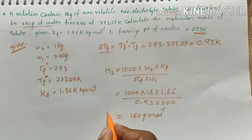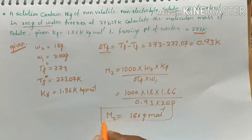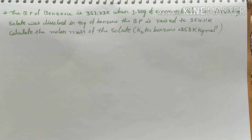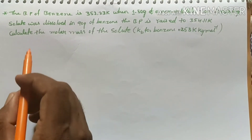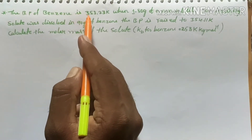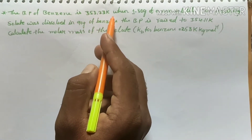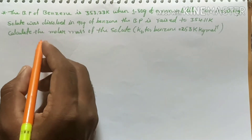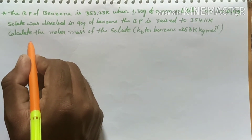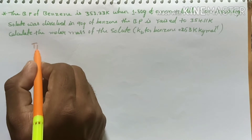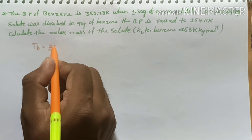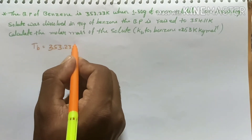This is the molecular mass of the solute. Now we go for the next problem. The boiling point of benzene is 353.23 kelvin — so Tb° = 353.23 kelvin is given.